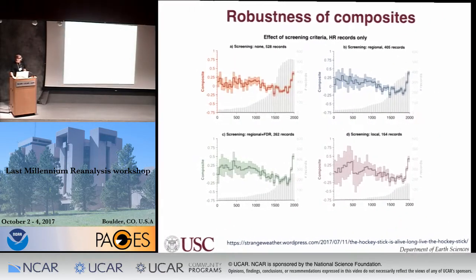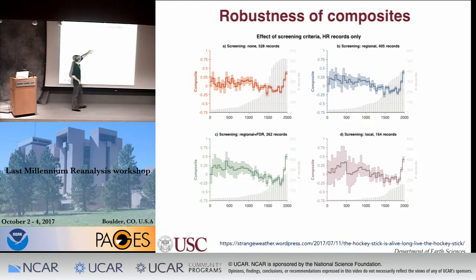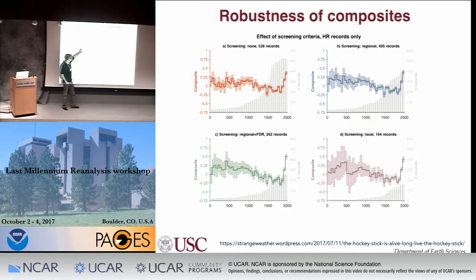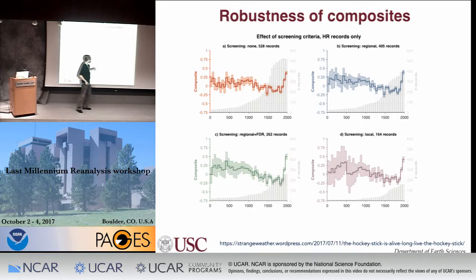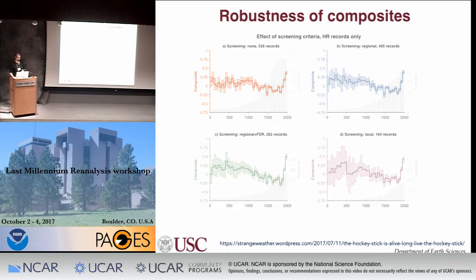Another game we played was to explore the robustness of these composites compared to different kinds of screening — from relatively coarse, where you're left with 400 records, to fancy stats where you're down to 262, or even more stringent where you restrict to only those proxies with significant correlation to the closest temperature grid point. Regardless of how you look at it, you get a hockey stick.